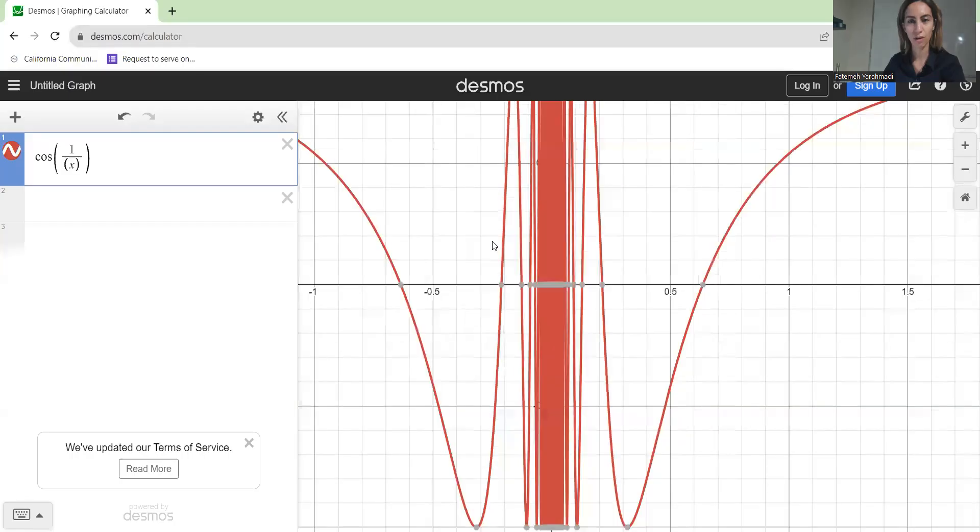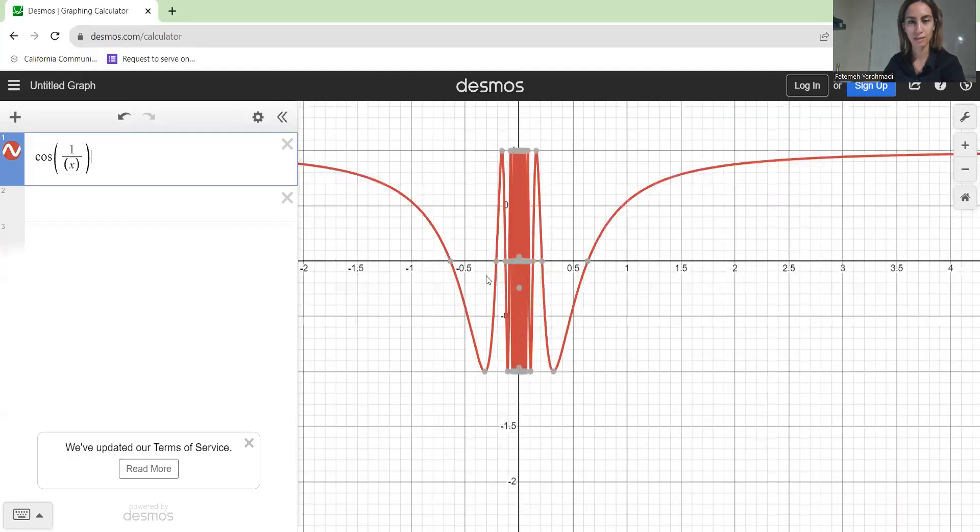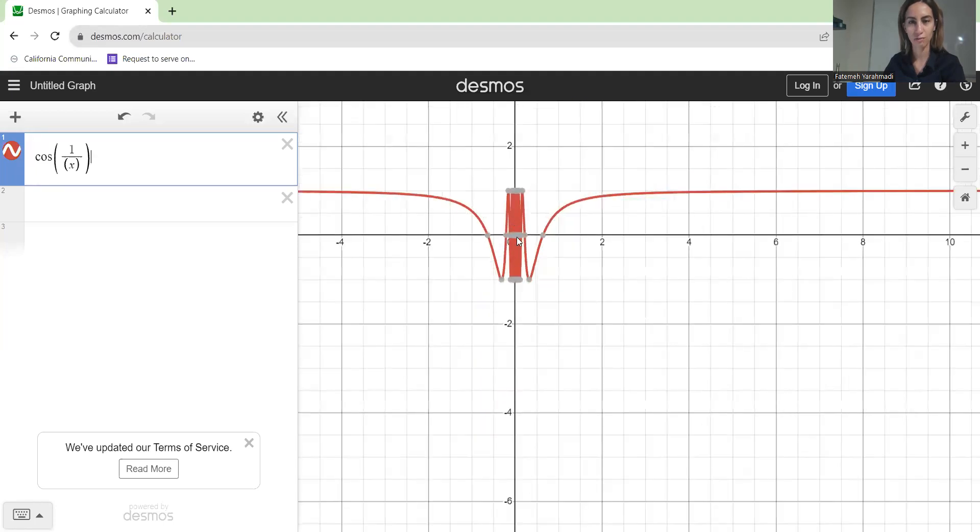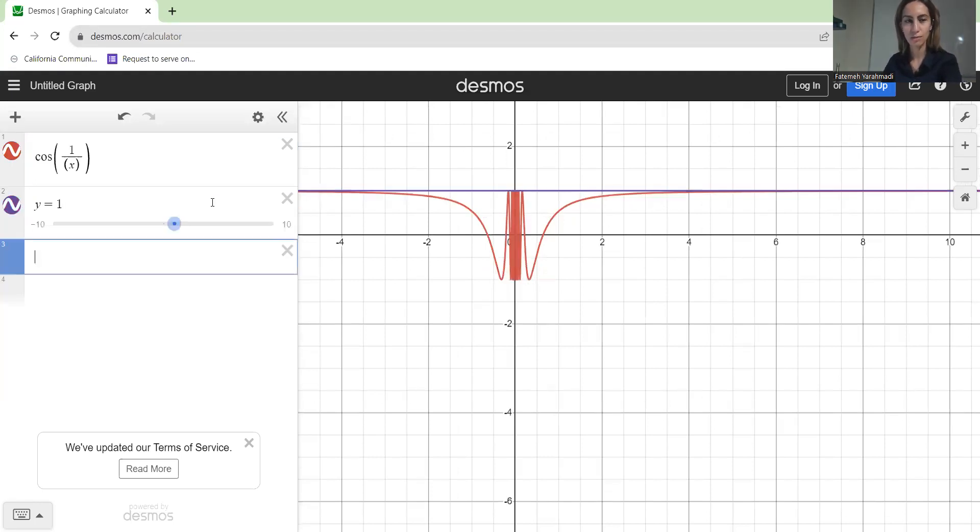Cosine of 1 over x. This is cosine of 1 over x. Complicated function. What is the behavior around the origin? Graph y equals to 1 and y equals to negative 1, two nice constant functions that we need to always remember.